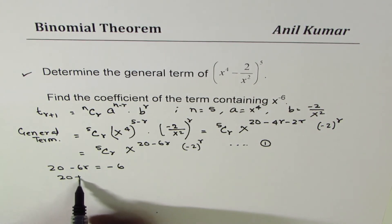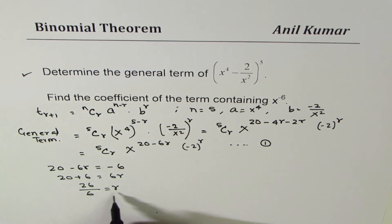So we can simplify this: taking 6 to this side, we get 20 + 6 equals 6r. 26 divided by 6 is r. Now as you know, r has to be a natural number, so that means no value of r. So that does not exist.